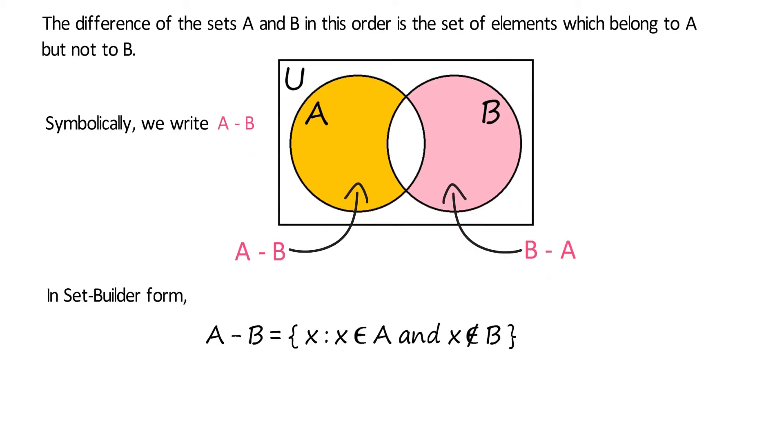In set builder form, A minus B can be represented as shown. It is read as the set of all X such that X belongs to A and X does not belong to B.